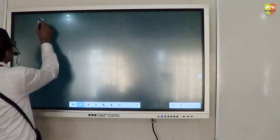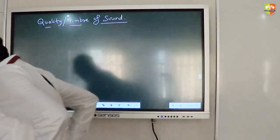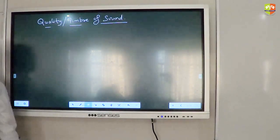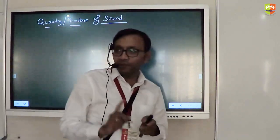So this is loudness. Now we will try to do quality of sound or timbre of sound. Quality or timbre of sound is that characteristic which enables us to distinguish one sound from another having same pitch and loudness. Same pitch and loudness.